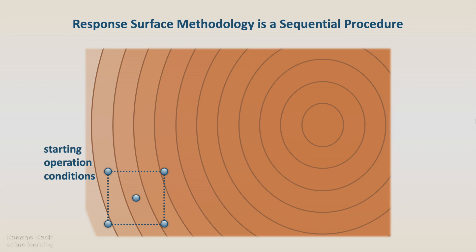The final objective is to maximize the response. This design will give information on which variables affect the response, and some clues about interactions and linearity. As we didn't know anything about the system when we began to study, the first design and starting operation conditions are far from the maximum. As the contour lines in this region have little curvature, we can describe the behavior by a linear model.